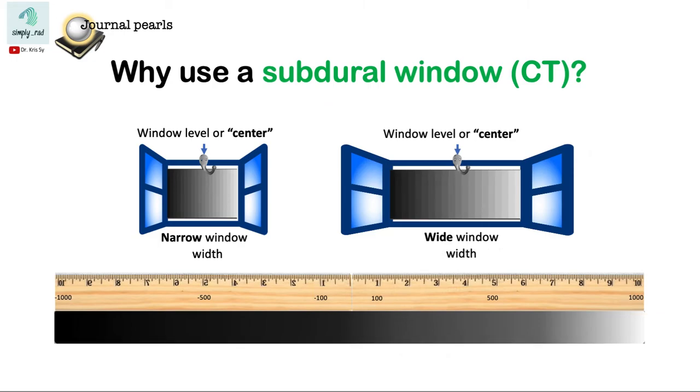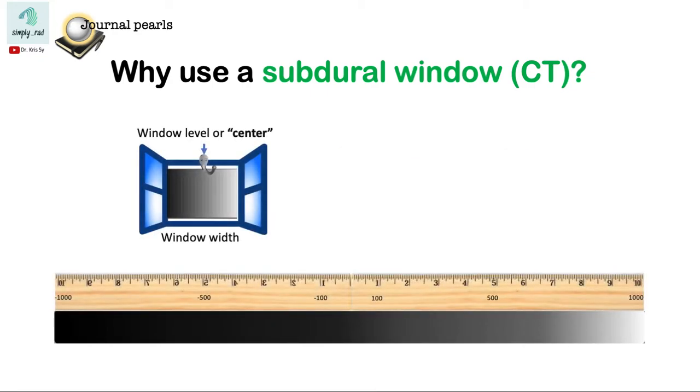In the previous video, we covered the general concept of use of window widths and window land levels or center. We also talked about how the window widths affect the contrast. We also learned that the narrow widths that you have increases the contrast among the tissues which differ from each other in relatively small increments of Hounsfield units.